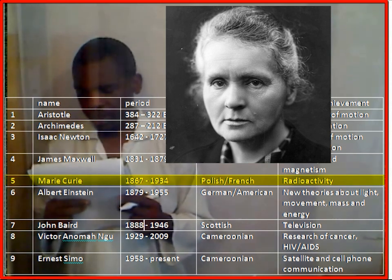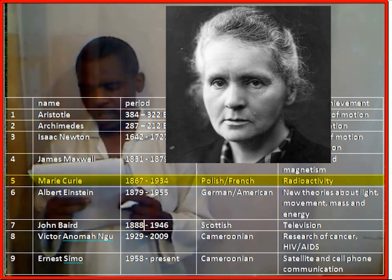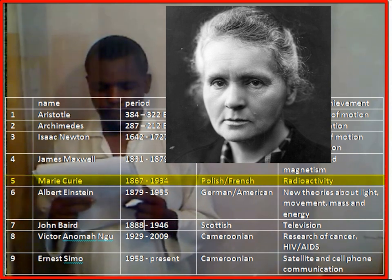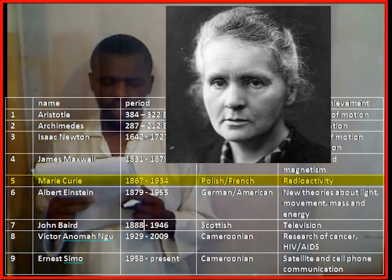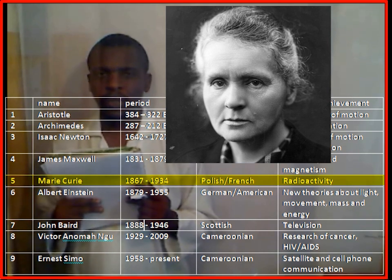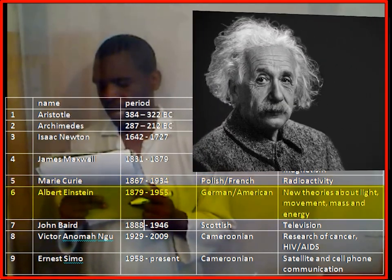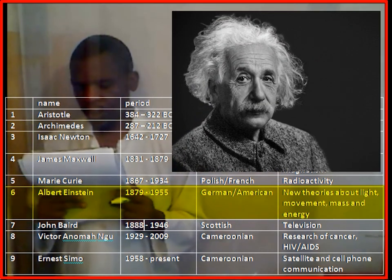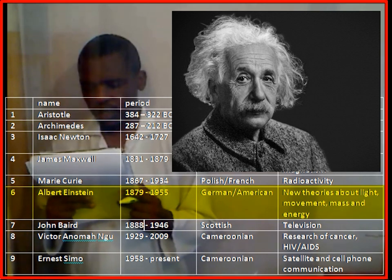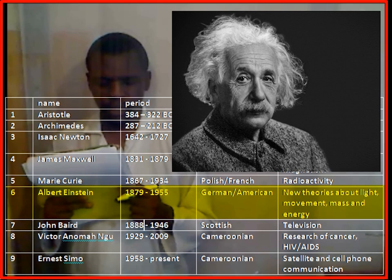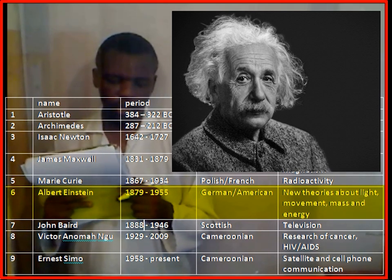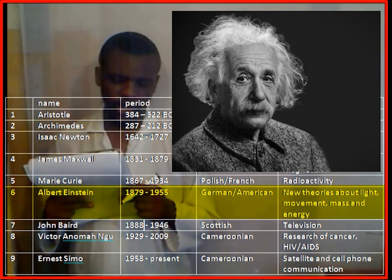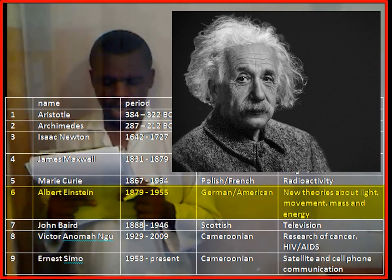Marie Curie lived between 1867 and 1934, a Polish-French scientist, and she worked on radioactivity. Albert Einstein lived between 1879 to 1955, he was German-American, and his contributions were new theories on light, movement, energy, and mass.